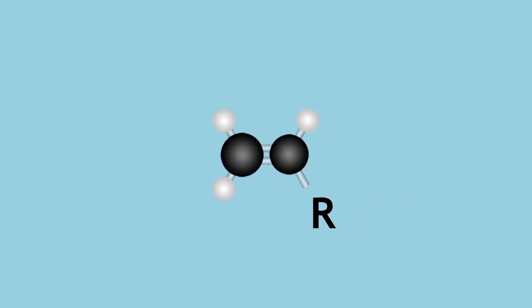Alkenes contain a carbon-carbon double bond, for example, ethene, propene, and butene.